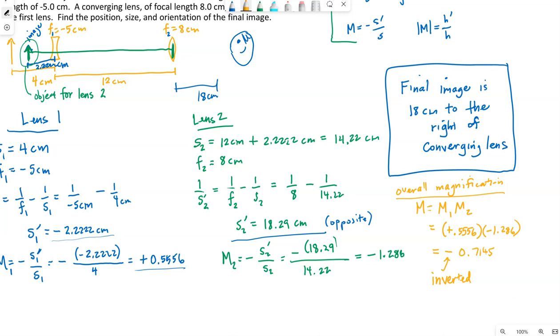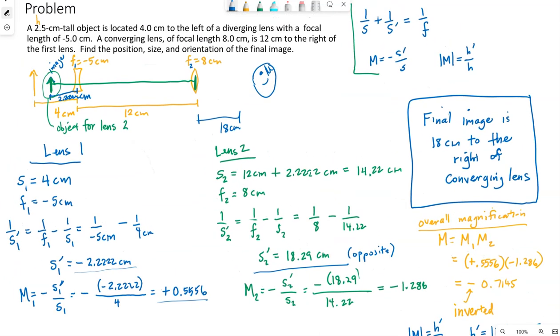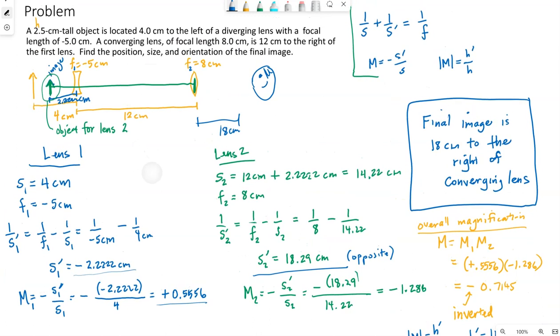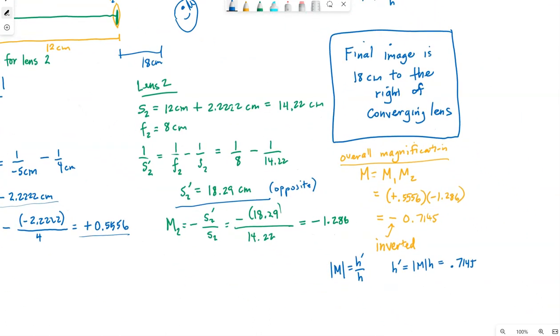The size comes from taking this magnitude of the overall magnification and relating it to the height of the image to the height of the object. So our magnification 0.7145 I have to come back and find the height. So our object is 2.5 centimeters tall.